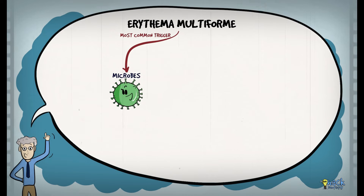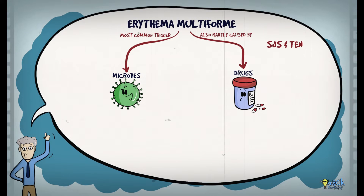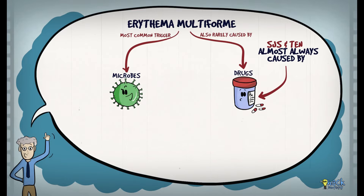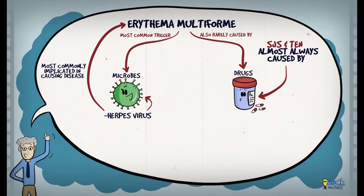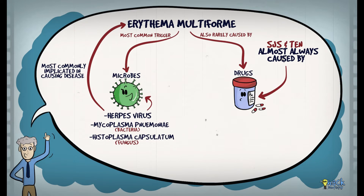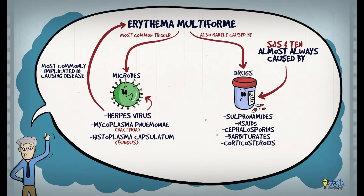Erythema multiforme is most commonly triggered by microbes, although a small but significant number of cases are also caused by drugs. Stevens-Johnson syndrome and toxic epidermal necrolysis, on the other hand, are almost always caused by drugs. Herpes virus is most commonly implicated in causing erythema multiforme; other infectious agents include Mycoplasma pneumoniae and Histoplasma capsulatum. Drugs such as sulfonamides, NSAIDs, cephalosporins, barbiturates, and even corticosteroids have been known to cause this condition.